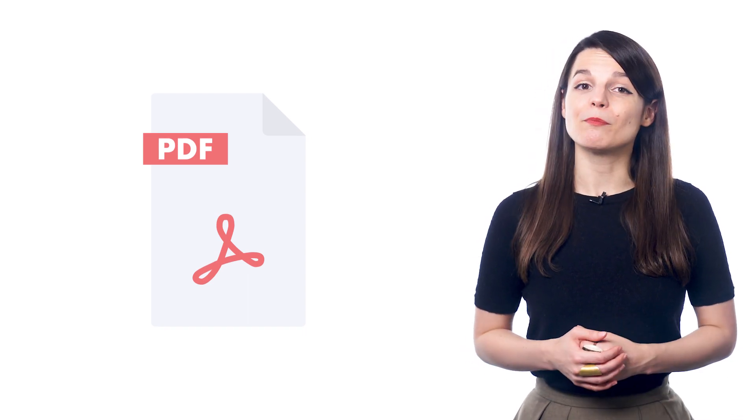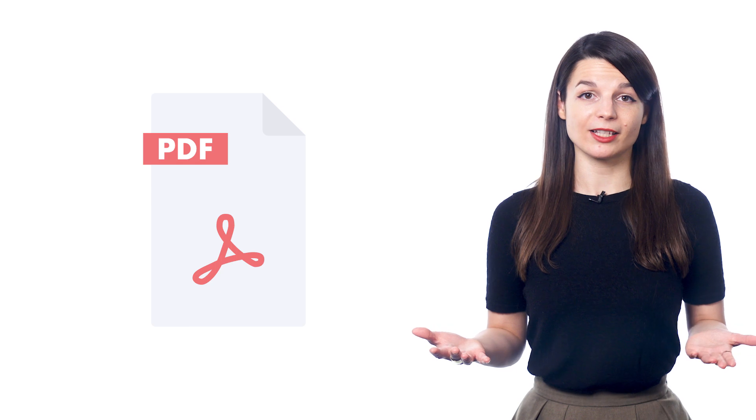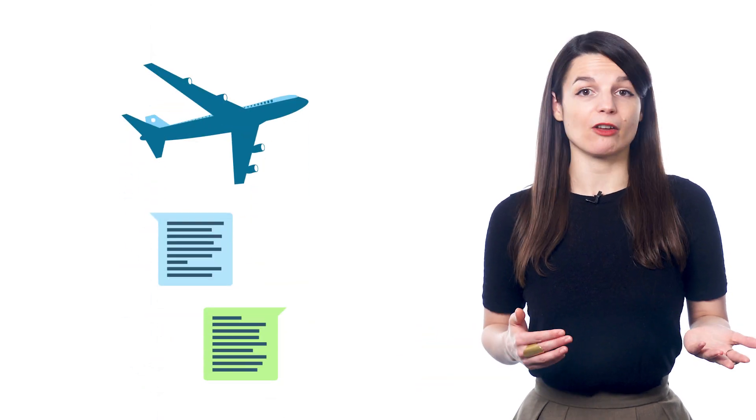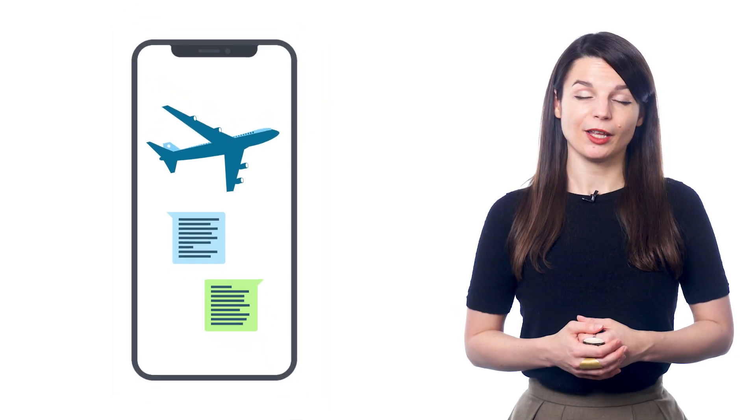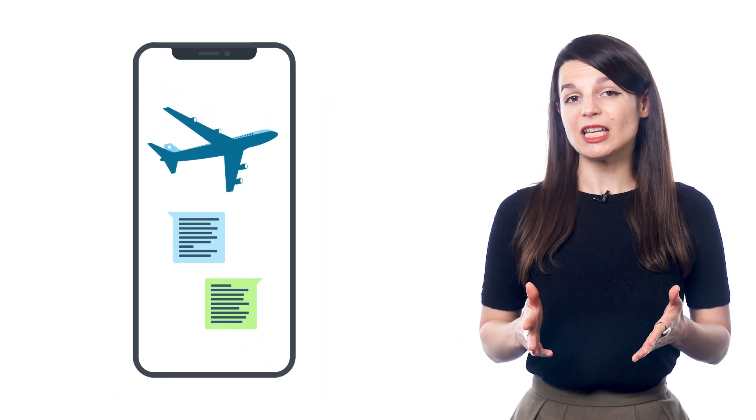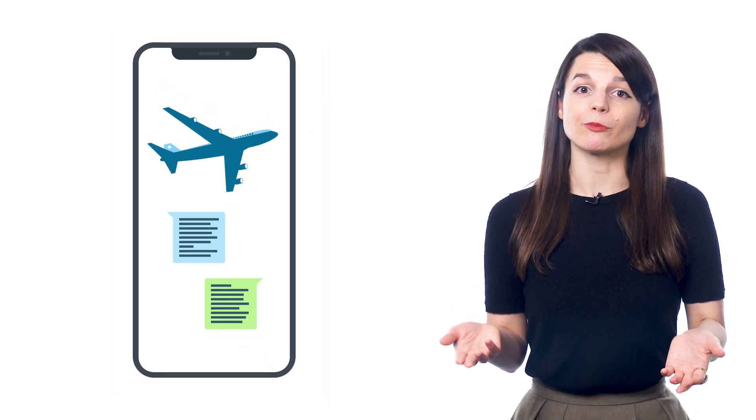You can also print out PDF conversation cheat sheets and infographics. These teach you the must-know words and phrases for all kinds of topics: travel, basic conversations, talking about hobbies, airport vocab, and much more. With the infographics, you can save the images to your phone and just swipe through them for a quick review.